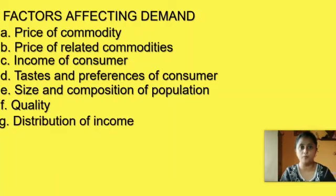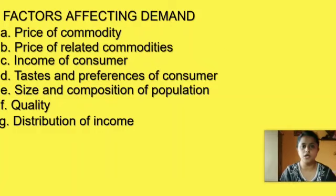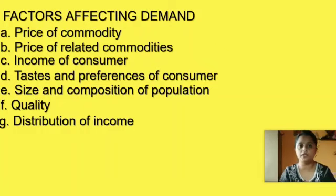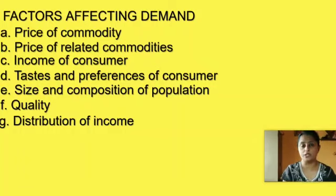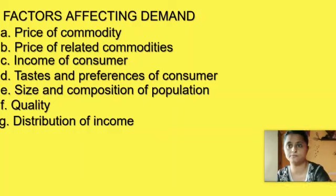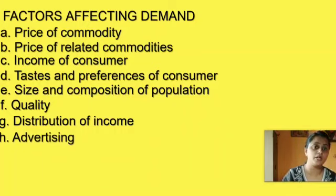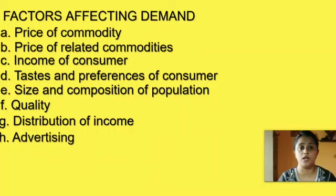The next factor is distribution of income. If income is equally distributed, demand for all commodities will remain in almost the same proportion. If there are more poor people, demand for necessities will be more; an increase in the percentage of rich people will increase demand for luxuries. The next factor is advertising — a very important factor today. Advertising can increase brand loyalty and increase demand. For example, higher spending on advertising by Coca-Cola has increased its sales.